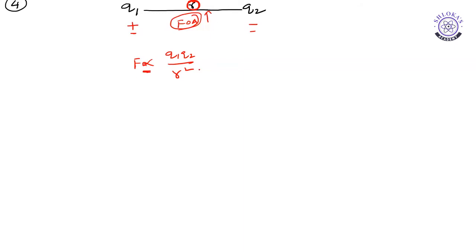That force can be calculated by F is directly proportional to Q1 Q2 by R square. Directly proportional to charge and inversely proportional to distance between them. If I remove this proportionality, I can write F is equal to K into Q1 Q2 by R square. What is K? I can write 1 by 4 pi epsilon naught into Q1 Q2 by R square.